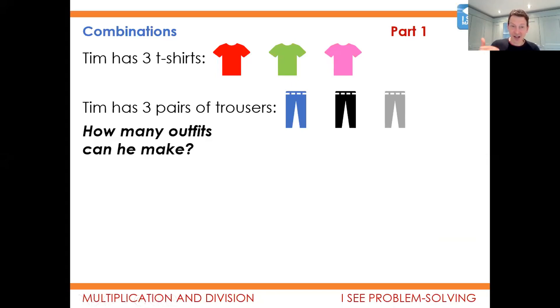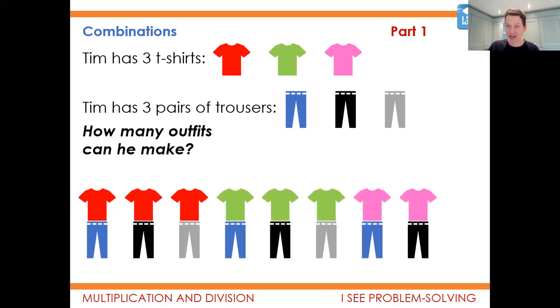The worked example starts off with this one here. Tim has three T-shirts and three pairs of trousers. Initially, Lily thinks you can make three different outfits. Then when we start to show the first two examples, she actually realizes, no, actually there's more. She counts for each T-shirt and works out that actually there are nine outfits. And then we show the different images.